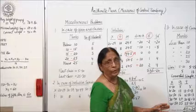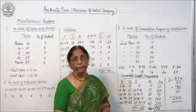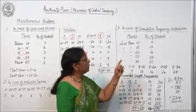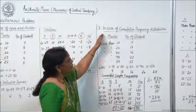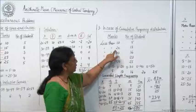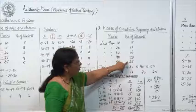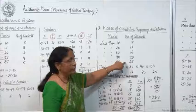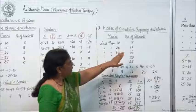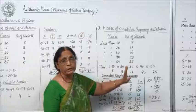Now the third problem — sometimes cumulative frequencies are given, and I told you in the previous lectures that cumulative frequency is the added frequency. This is the case of cumulative frequency distribution: here 'less than 10,' 'less than 20' — all cumulative frequencies are given in the form of less than. When the less-than or more-than form is given, these are always in the form of cumulative frequency. These are not simple frequencies — these are added-up frequencies.